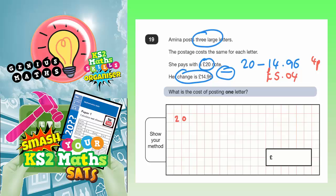So, you'd have £20.00, which is £20, subtract £14.96. Now, there'll be a lot of borrowing going on here.